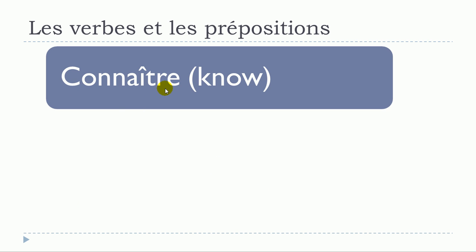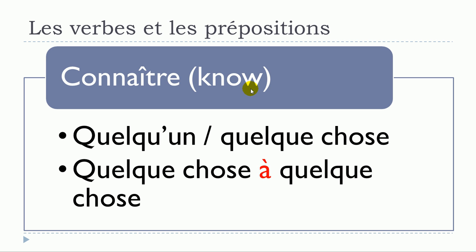The next verb is connaître, which means to know. First structure, no preposition: connaître quelqu'un, connaître quelque chose. Second structure: connaître quelque chose à quelque chose. One more time: connaître quelqu'un, connaître quelque chose, connaître quelque chose à quelque chose.